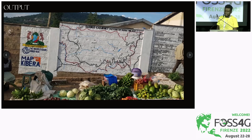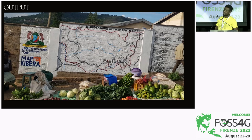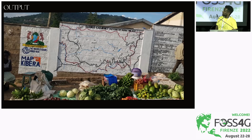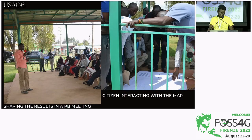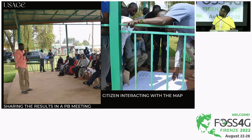Another challenge in such communities is access to the internet. If information is only available online or in printed maps, we leave out many people from the community. One strategy MapKibera employs is creating murals with the information and placing them in strategic locations within the community so people can access and interact with it. This is Joshua, who was supposed to present, sharing back with members of the public during one of the participatory meetings, and the community interacting with the maps after completion.